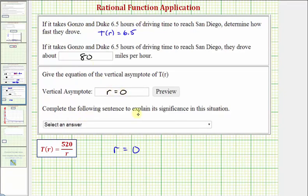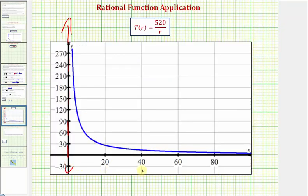Now we're asked to complete a sentence to explain the significance of the vertical asymptote. Let's interpret this by looking at the graph. The horizontal axis gives us the rate in miles per hour. Notice as the rate in miles per hour approaches zero or approaches that vertical asymptote, the function values increase without bound or approach positive infinity.